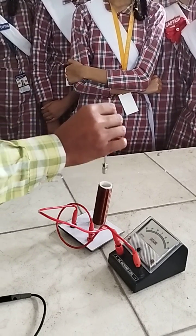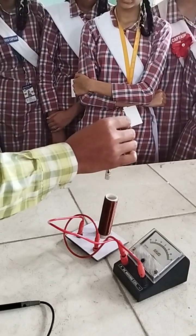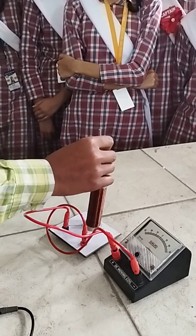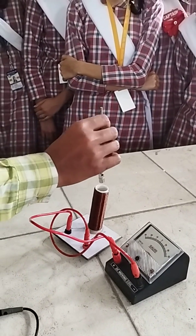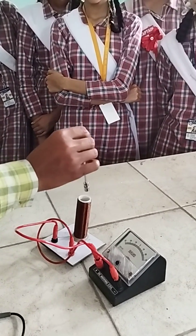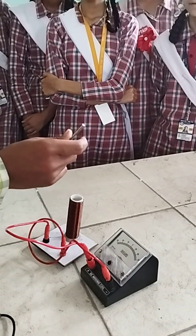So whenever there is a change in the magnetic flux, the induced EMF is set up in the coil, and that is giving rise to current. This is Faraday's first law, which gives you the definition of EMI or electromagnetic induction.